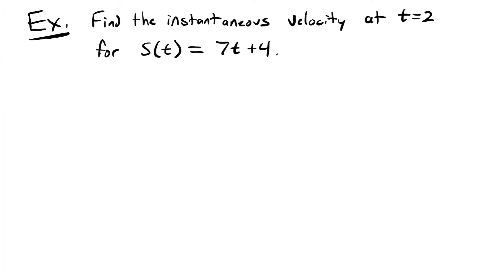Now let's revisit that position function 7t plus 4. Instead of finding the average velocity, let's find the instantaneous velocity at a specific time. Remember, average velocity tells us the average between two points in time, but instantaneous velocity tells us the velocity at one specific point in time. That is where the derivative comes in — the derivative of a position function is the velocity function. To find the instantaneous velocity at time equals 2, we first take the derivative of our position function.